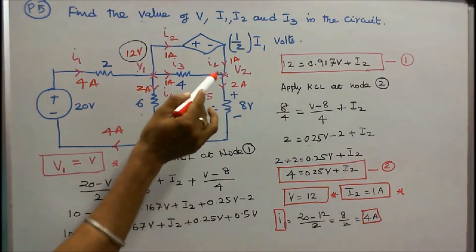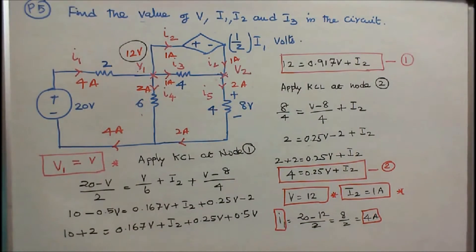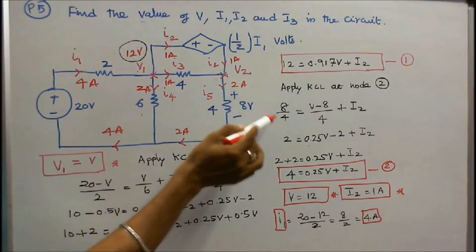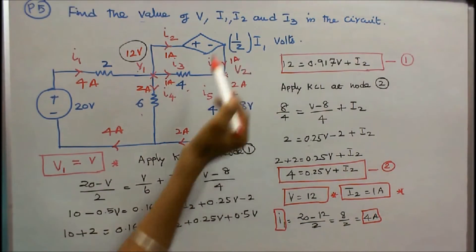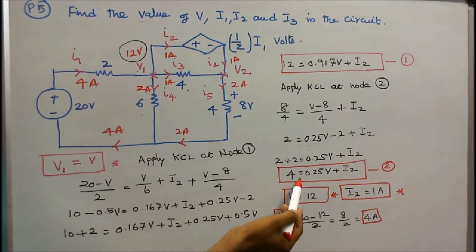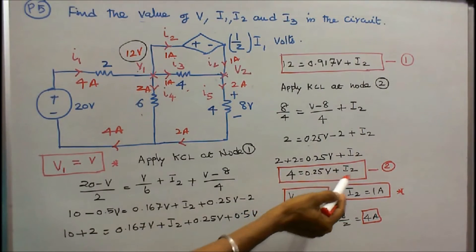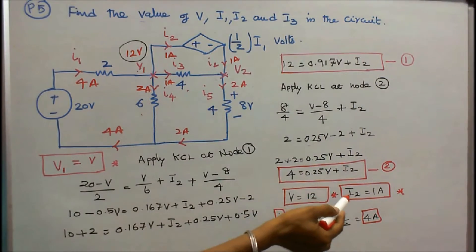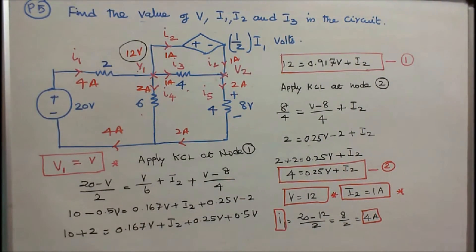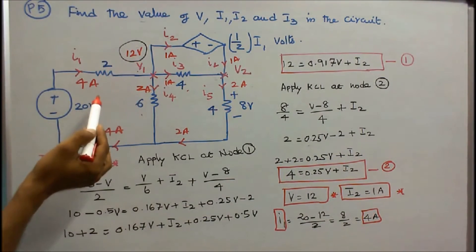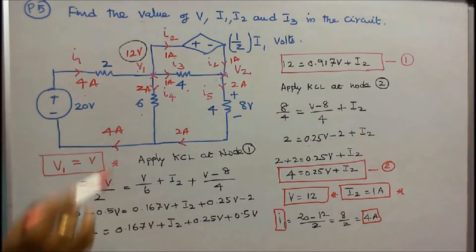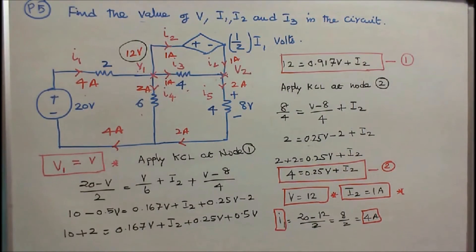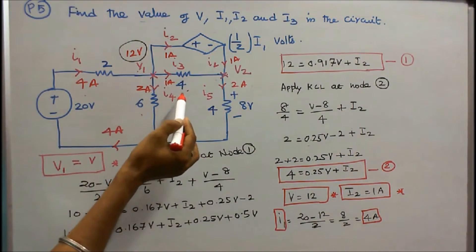Apply Kirchhoff's current law at node 2. Since 8 volts is given, the current I equals V by R, that is 8 by 4, equal to 2 amps. So (V minus 8) by 4 plus I2 gives 4 is equal to 0.25V plus I2. That is equation 2. Solving the two equations: V is equal to 12, I2 is equal to 1. I1 is equal to (20 minus 12) divided by 2, that is 8 by 2, equal to 4 amps. I2 is equal to 1 amp. I3 is equal to (12 minus 8) divided by 4, that is 4 by 4, equal to 1 amp.